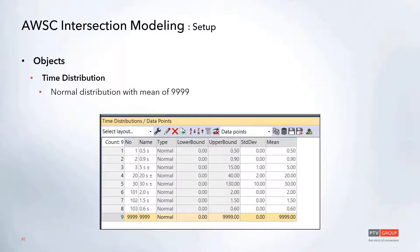We'll also have to define a time distribution. This is going to be used to set a really long dwell time for all the vehicles as they stop at the stop signs. So in this case, I'm just setting one with a mean of 9,999 seconds, just to make sure the vehicles won't go anywhere.